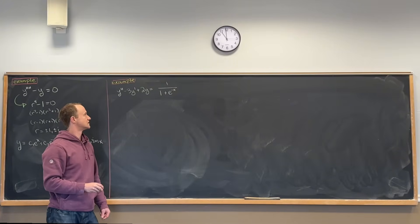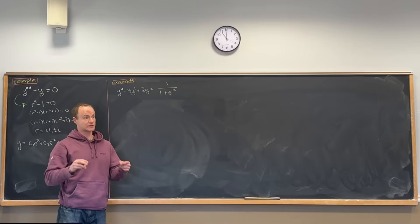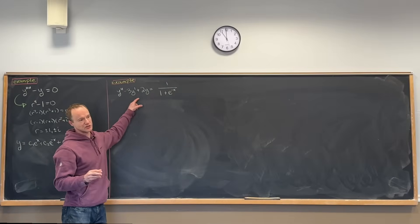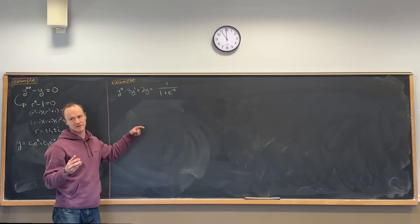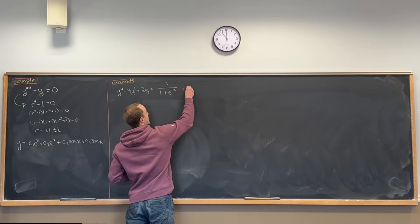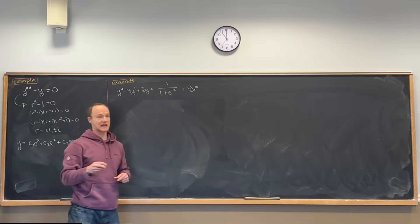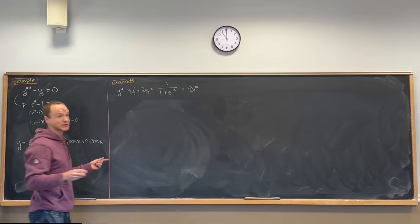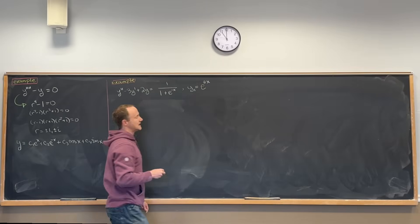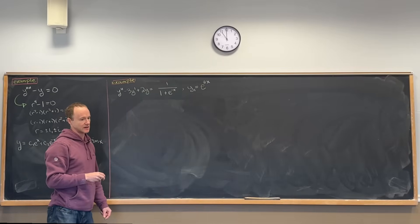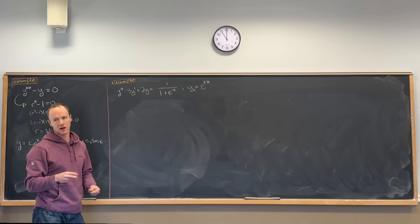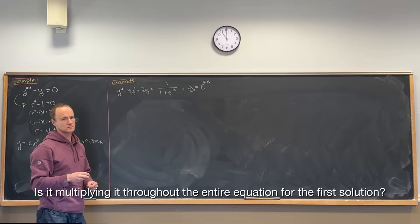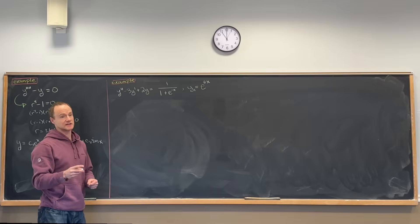The first thing we do is use the reduction of order method, which requires us to know a solution to the associated homogeneous equation. We do know a solution: e to the 2x. You can get that solution by finding roots of the characteristic polynomial. Any solution will do — I'm just going to write it down.